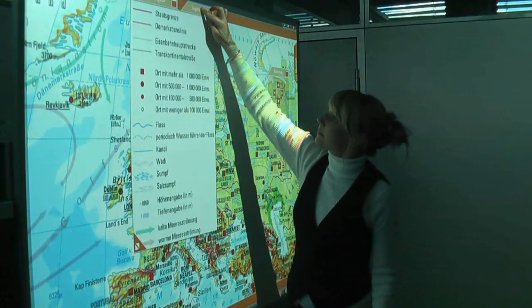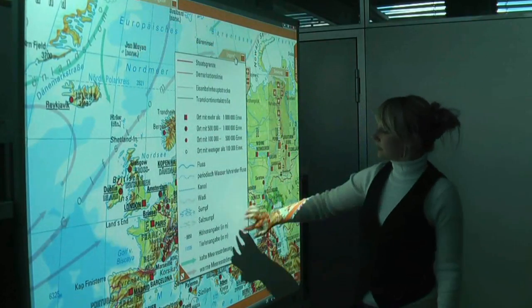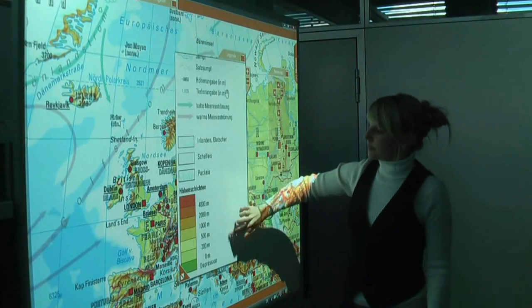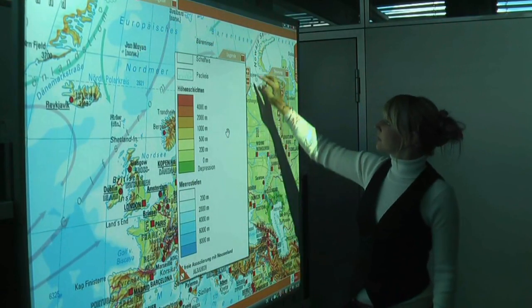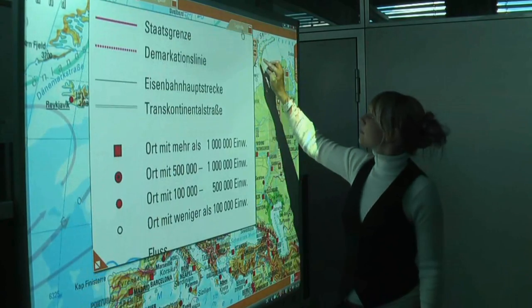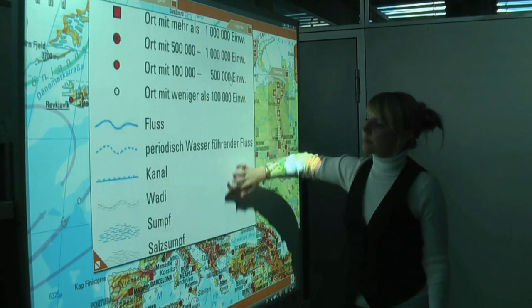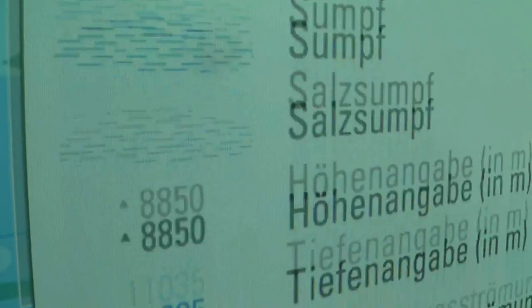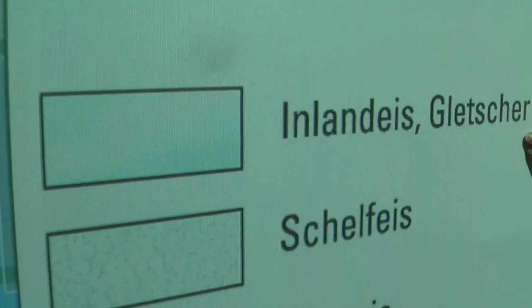The maps have a legend window, which the teacher can fade in to explain the relevant cartographic symbols. A magnification function ensures that the legend is also easily visible in larger classrooms.